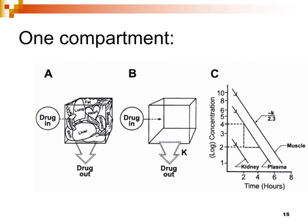This shows one compartment model where all organs are in the same compartment and drug input and output occur from the same compartment. The plasma concentration versus time profile plotted on a log scale shows drug concentration falling in different tissues — kidney, plasma, muscle — as parallel straight lines, indicating kinetic homogeneity.